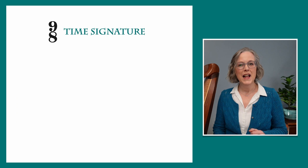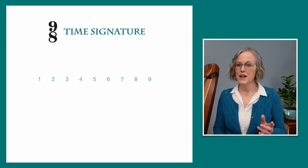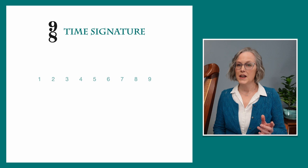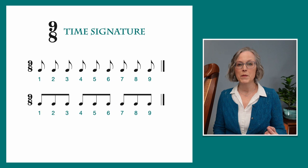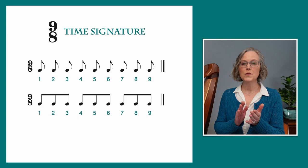Let's begin with the time signature. 9-8 means that there are nine counts in every measure, and each count is worth an eighth note. Now, in 9-8, those eighth notes will tend to come in groups of threes like this, and we would count it 1, 2, 3, 4, 5, 6, 7, 8, 9.